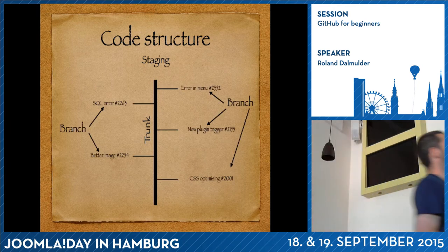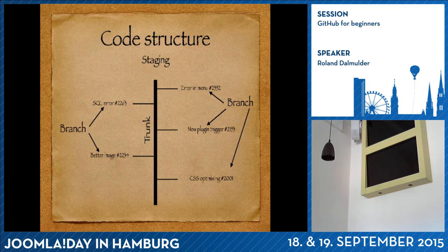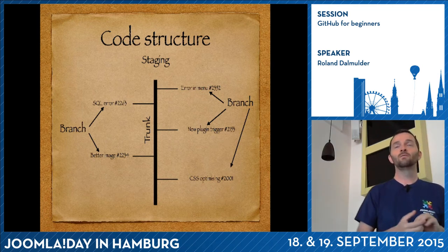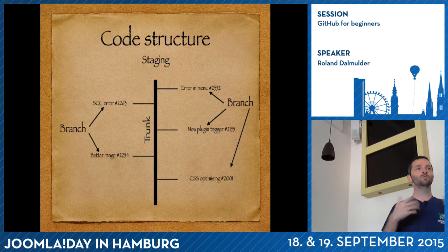These are the branches people have made. A branch can be a bug fix, a new feature — it can be anything. When we make a branch and send it online it gets a number, and those numbers are the same ones found in the Joomla issue tracker, plus a description. If you make a branch online on GitHub it calls it patch 1, patch 2, patch 3 — which doesn't really make sense. So if it's for a better image, CSS optimizing, or fixing an error in the menu, you name it something meaningful.